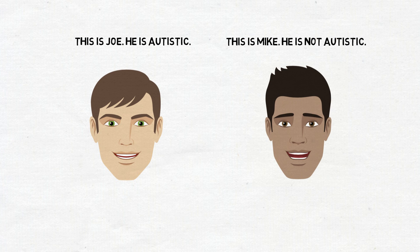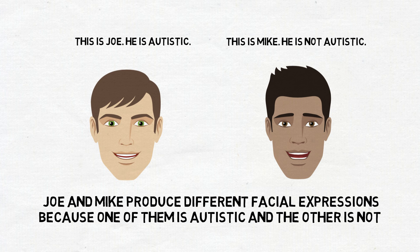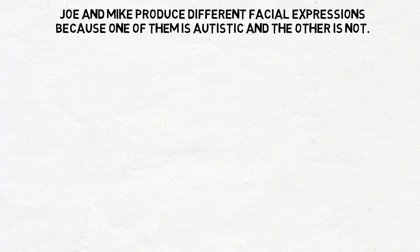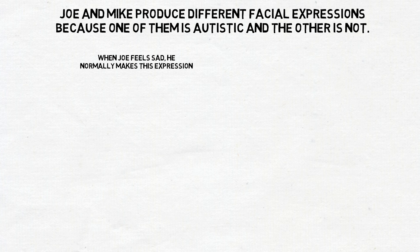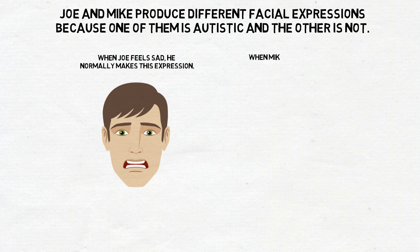Joe and Mike typically produce different facial expressions because one of them is autistic and the other is not. When Joe feels sad, he makes an expression that looks a bit like this. And when Mike is sad, he typically makes this slightly different expression.